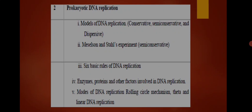The second unit is prokaryotic DNA replication. If you know about the central dogma of biology, it generally starts with the first process — DNA replication. After that the second process is transcription, in which DNA is converted into RNA, specifically messenger RNA. After that the last process of the central dogma is translation, in which the message coded by the mRNA is translated into protein — that process is called protein synthesis.